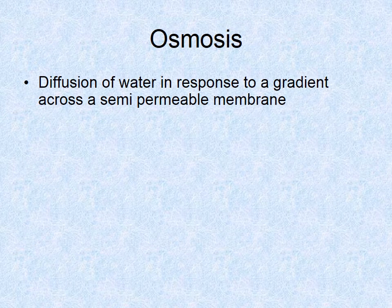Osmosis is the diffusion of water in response to a gradient across a semi-permeable membrane. When you have a high concentration of water on one side and a low concentration on the other, that movement is osmosis. Basically, osmosis is just simple diffusion of water.